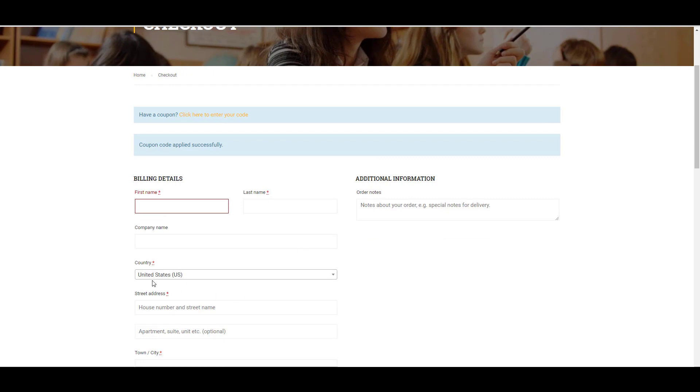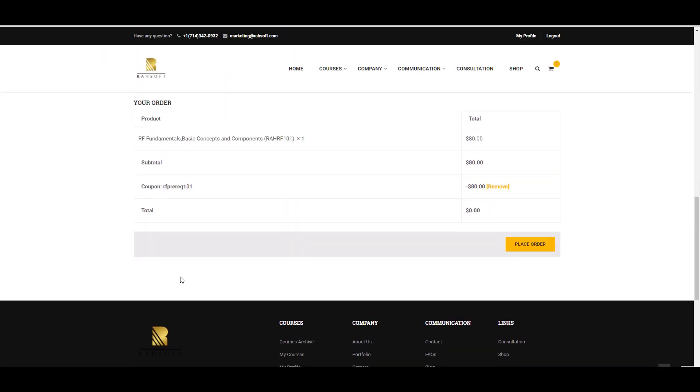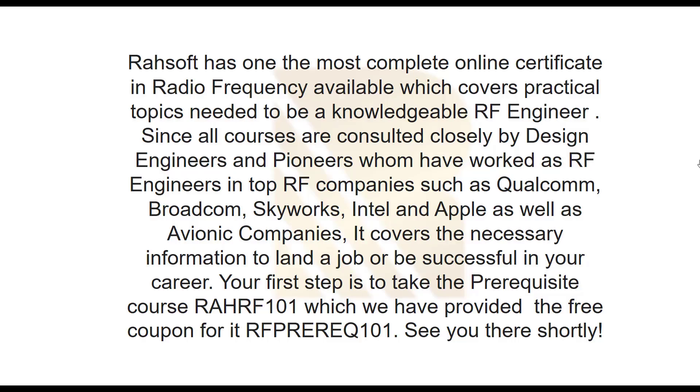Then you will have this course for free. RASOF has one of the most complete online certificates in radio frequency available, which covers practical topics needed to be a knowledgeable RF engineer. Since all courses are consulted closely by design engineers and pioneers who have worked as RF engineers in top RF companies such as Qualcomm, Broadcom, Skyworks, Intel, and Apple, as well as avionic companies, it covers the necessary information to land a job or be successful in your career. Your first step is to take the prerequisite course RAHRF101, which we have provided the free coupon for. The code is RFPREREQ101. See you there shortly.